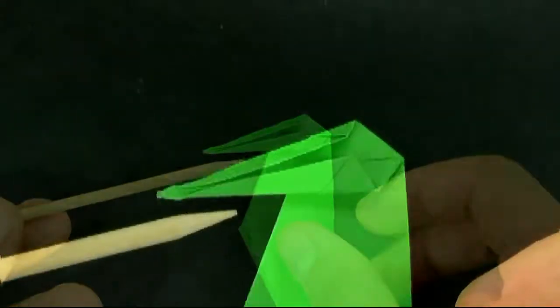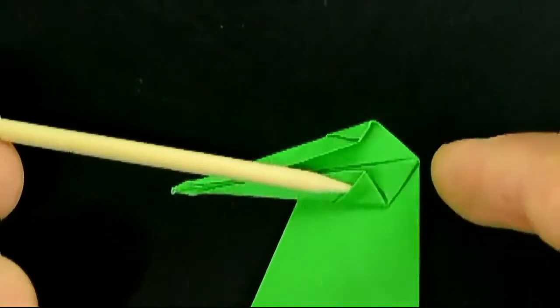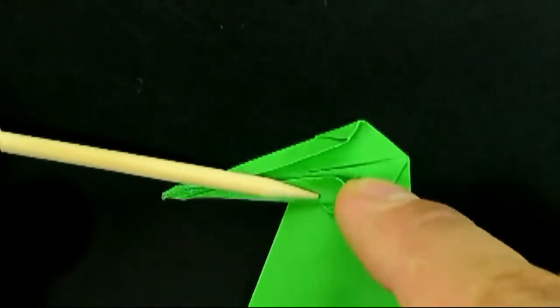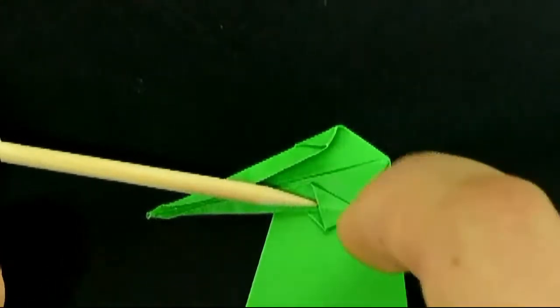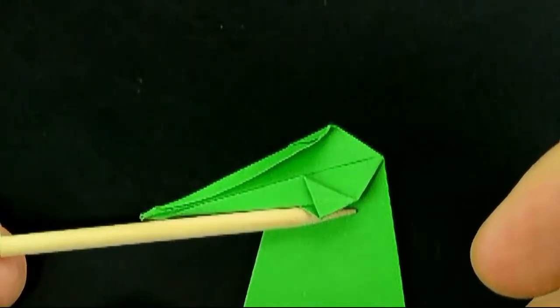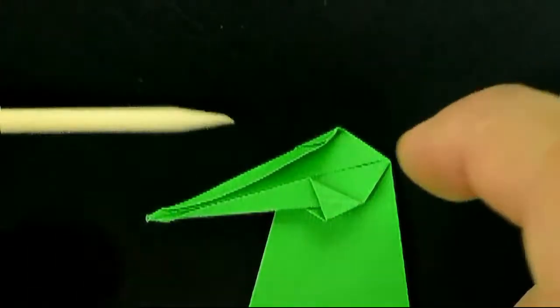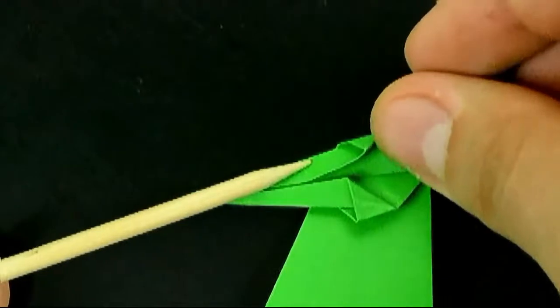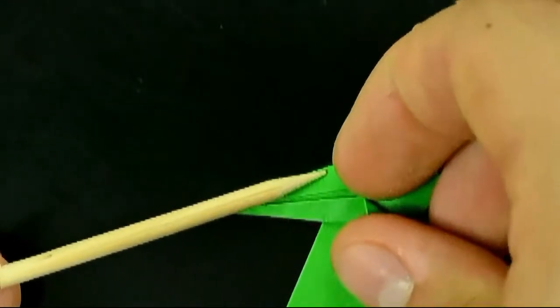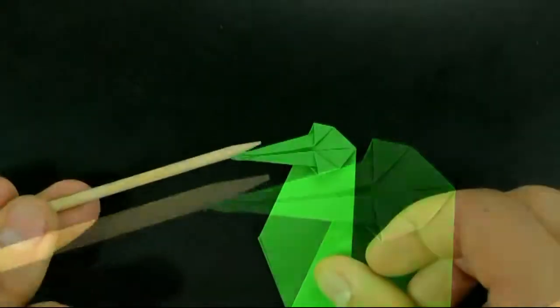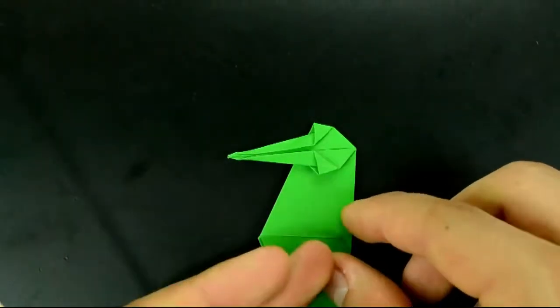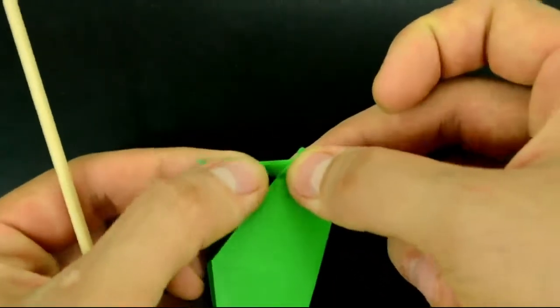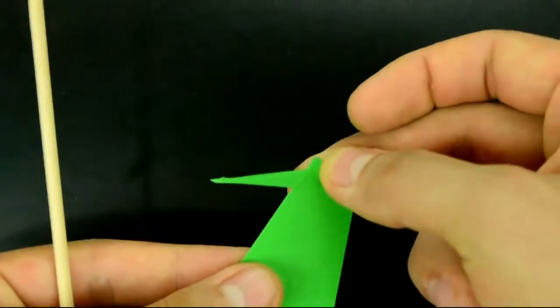You just need to open this little space here. And flatten the paper to give this shape. Repeat on the other. And close this space. With this done, the details of the head and beak are ready.